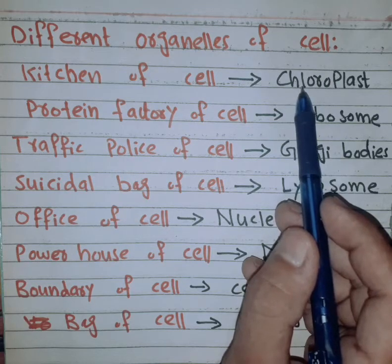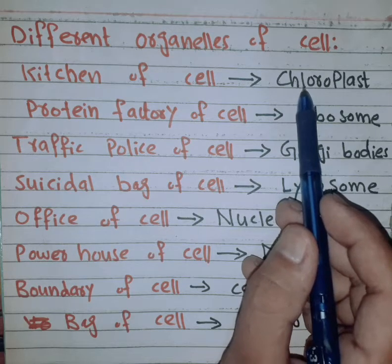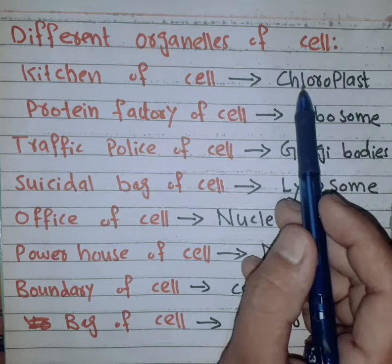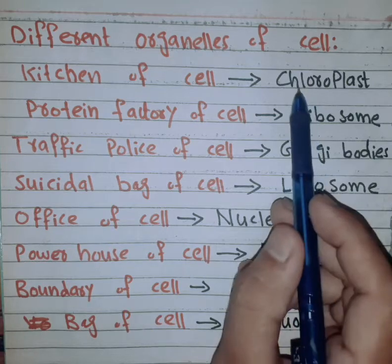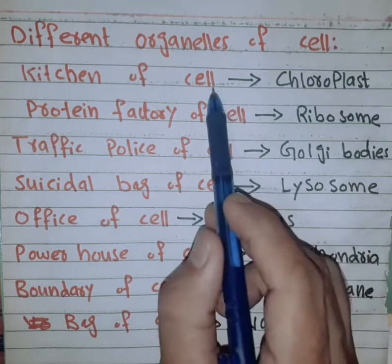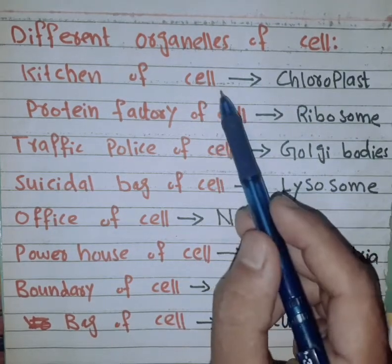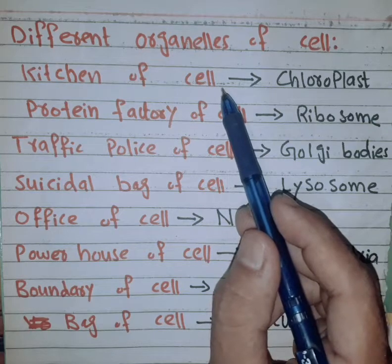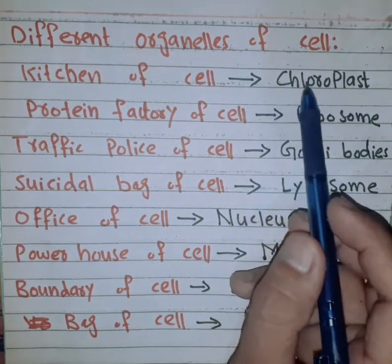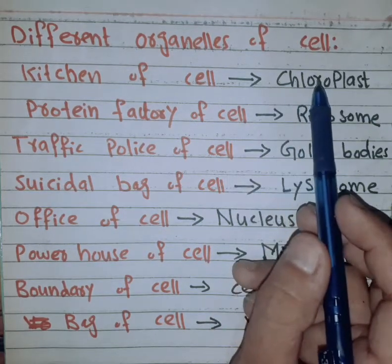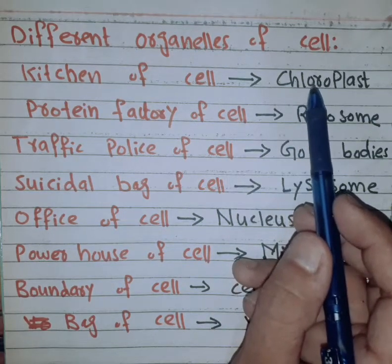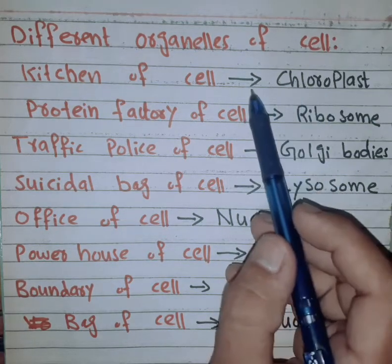The plant cell produces food from chloroplasts with the help of photosynthesis. Chloroplasts are the kitchen of the cell — it means food is prepared there. The plant cell uses chloroplasts to make food.